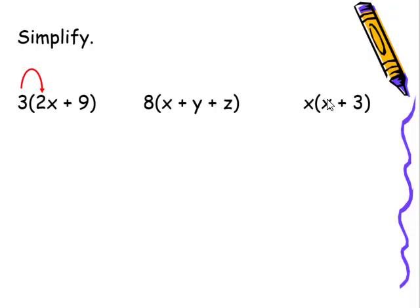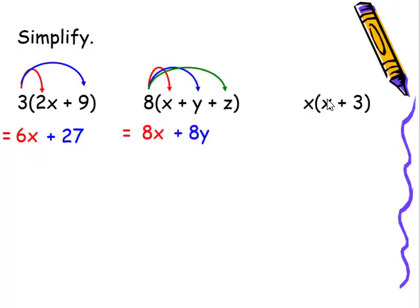In the first one, we're gonna distribute the three. That's gonna give us six X. Three times nine would give us a plus 27. In this particular case, this would give us eight X plus eight Y plus eight Z.